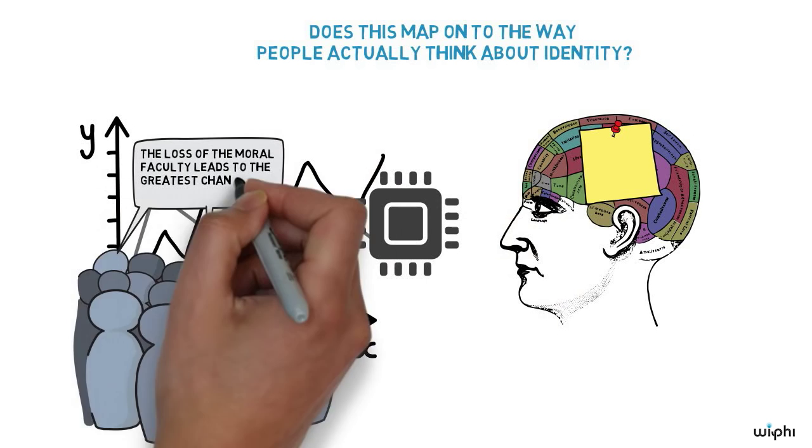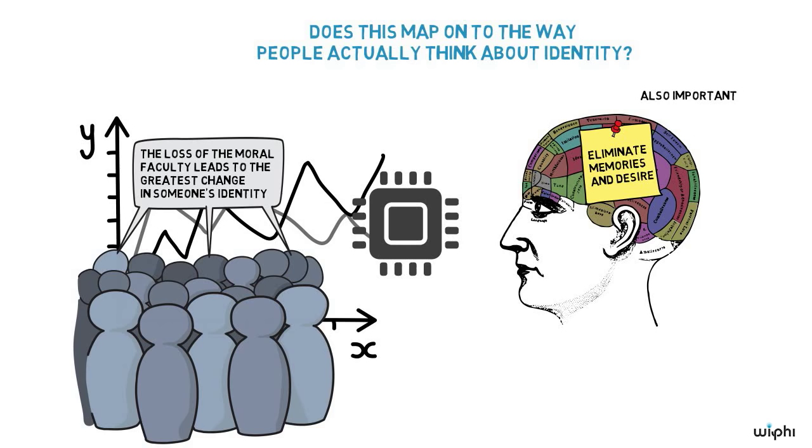People in this study overwhelmingly report that loss of the moral faculty leads to the greatest change in someone's identity. The elimination of memories and desires also leads to a substantial change in identity subjects report, just not as dramatic as one produced by a loss of moral capacities. Basic psychological processes, like object recognition, are not particularly important to identity permanence.